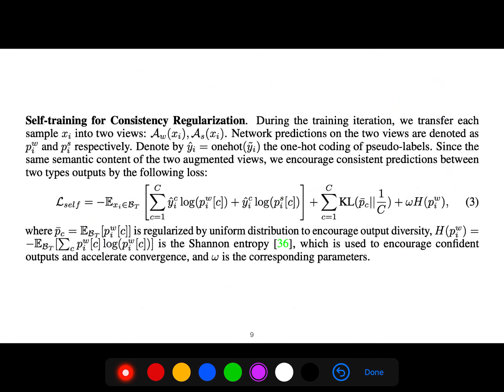For self-training, we encourage consistent prediction between the two type outputs following the KL divergence between p_c and 1/c. p_c is regularized by uniform distribution to encourage output diversity. The Shannon entropy H is used to encourage confident outputs and accelerate convergence.